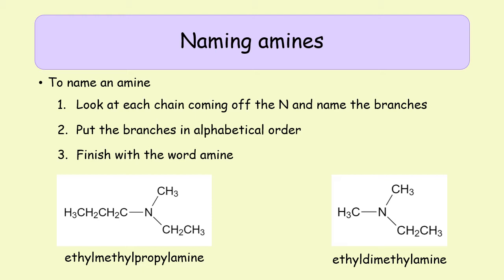When it comes to naming amines, we look at each chain or branch coming off the nitrogen and give each branch a name. We put those names in alphabetical order and then finish with the word 'amine.' For the molecule on the left, we have a methyl group, an ethyl group, and a propyl group. In alphabetical order: ethyl, then methyl, then propyl — so it is ethyl methyl propyl amine.